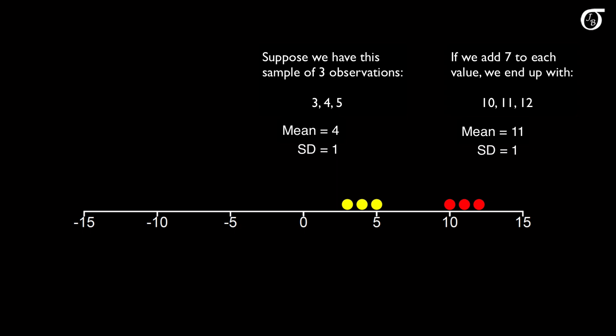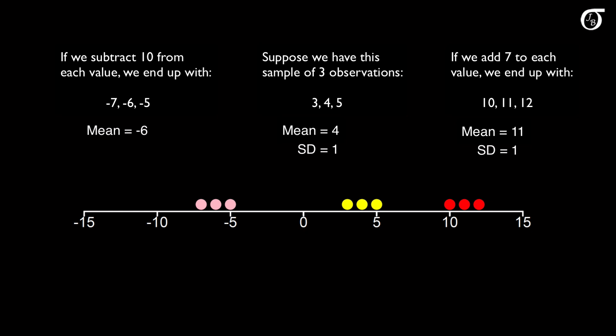The same idea holds for any additive constant. If we subtract 10 from the original values — the same as adding −10 — the values shift to the left 10 units, giving us −7, −6, and −5. These have a mean of −6: the original mean shifts 10 units to the left, but the standard deviation stays the same at 1. In general, adding a constant shifts the distribution right or left. Measures of central tendency like the mean, median, and mode will change by that constant, but any measure of variability — variance, standard deviation, range, interquartile range — will remain unchanged.